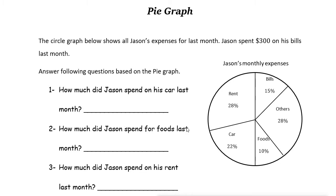Pie charts represent a snapshot of how a group is broken down into smaller pieces. For example, here Jason's monthly expenses is broken down into five different sectors.